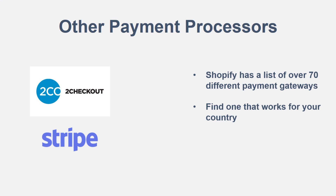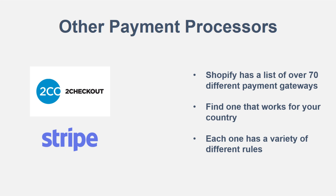Each payment processor also has a variety of different rules. Some may charge a higher transaction fee than others. Some may have a rule where you have to have been selling online for at least 90 days, or there are minimum balance requirements — things like that. You may need to have done something on your website first to be able to use the payment processor. So just double-check on each one and find one that will work for you. It's really important to at least be able to accept credit cards, because without a credit card payment processor you can't get paid for selling products.